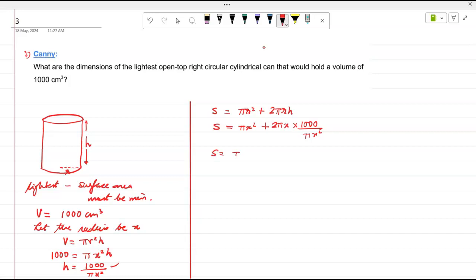So S is equal to pi x square plus, pi and pi cancels off. One of the x I can cancel off. So 2000 upon x. So can I write it x to the minus one for the derivative?